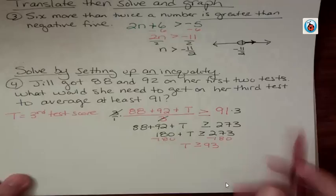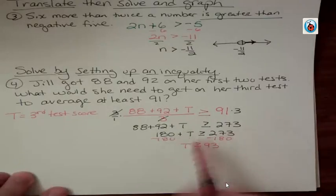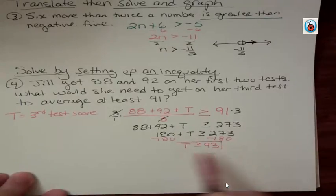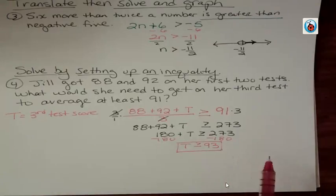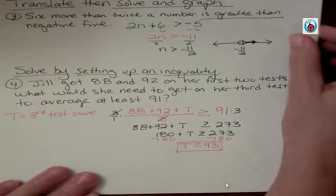So then you subtract 180 from both sides. You already just have one T. So what this means is that she needs to get a 93 or better on her last test if she's going to keep her average of 91 that she wants for some reason.